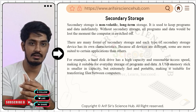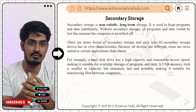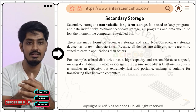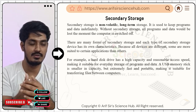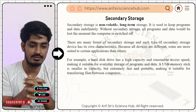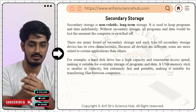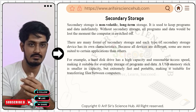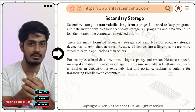Secondary storage means it's non-volatile and permanent storage — all the data we want to store permanently will be stored here. If the power goes off, the data will still be stored in secondary storage, which is why it's non-volatile. Primary storage, on the other hand, is volatile — if the power goes off, data is erased. Examples include the hard disk drive, solid state drive, and USB flash drives.